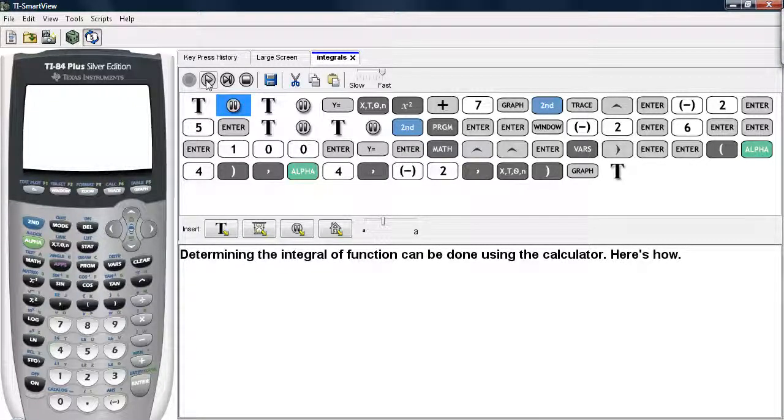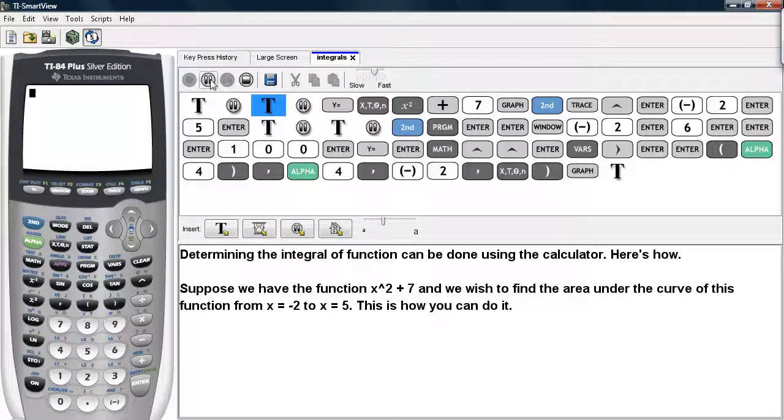Determining the integral of a function can be done using the calculator, and here's how. Suppose we have the function x squared plus 7, and we wish to find the area under this curve from x equals negative 2 to x equals positive 5. This is how you can do it.